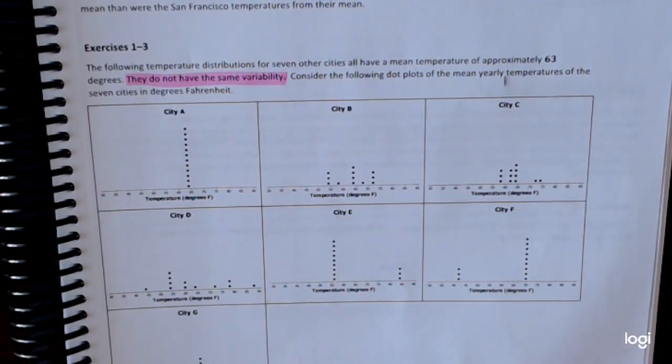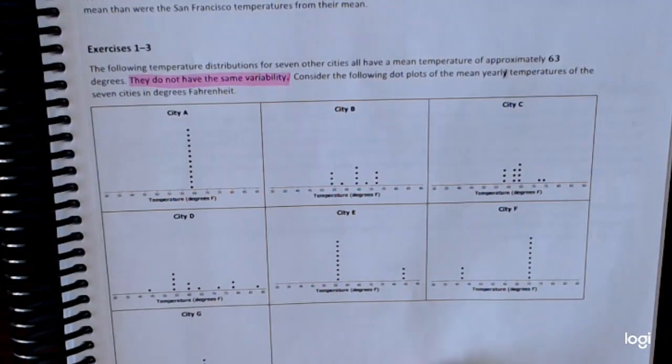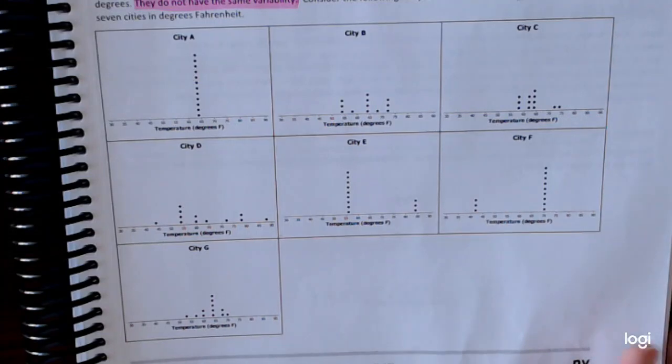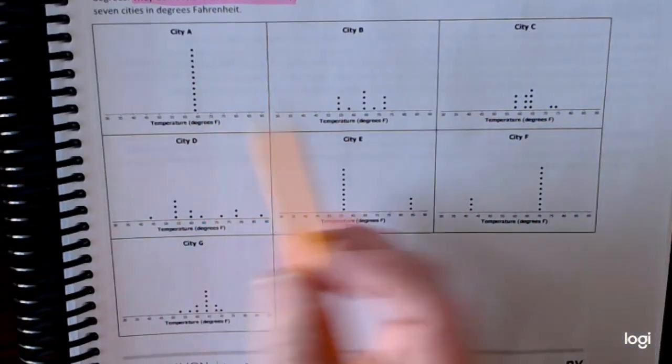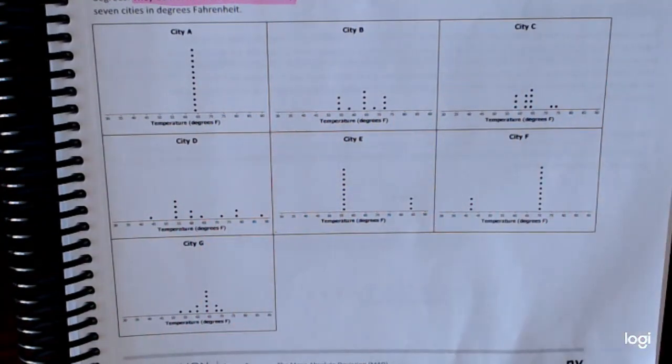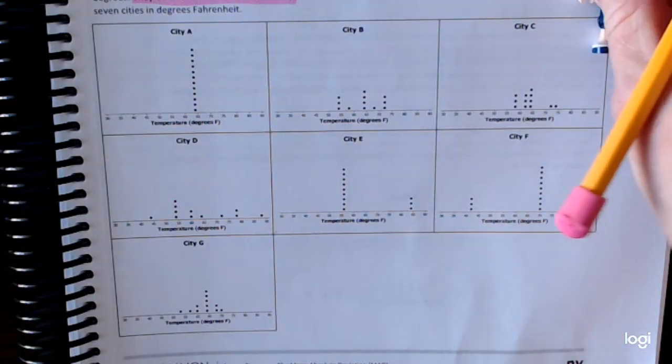What I have here for you is I have on your math book, there are a total of seven cities. And we don't know the names of the cities. They're just labeled A, B, C, D, E, F, and G. What I would like for you to do is I want you to look at these cities, and I'm going to ask you to answer three questions for me. Three questions.